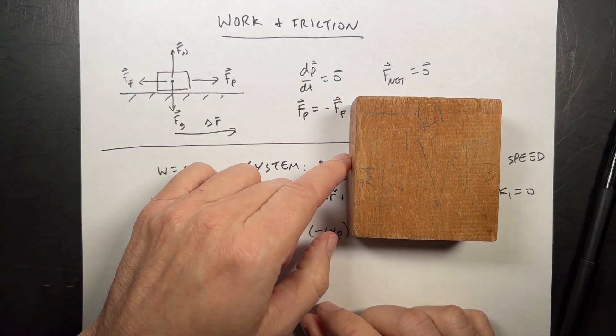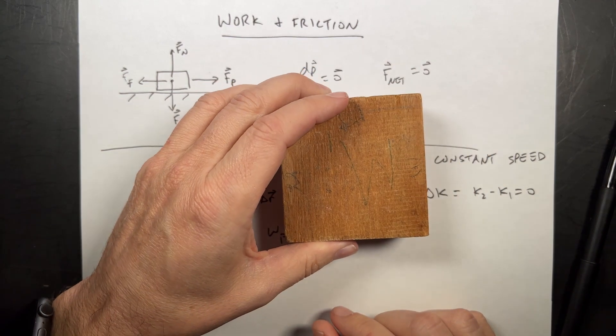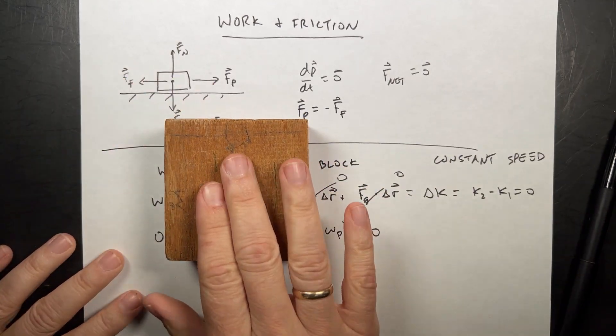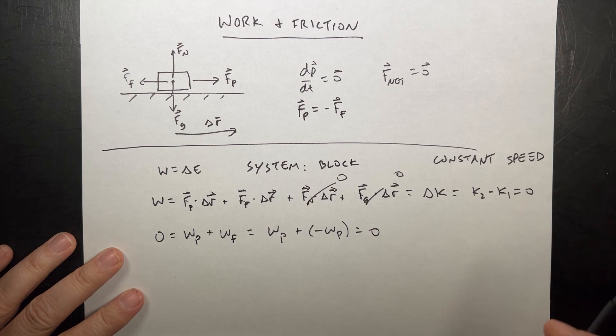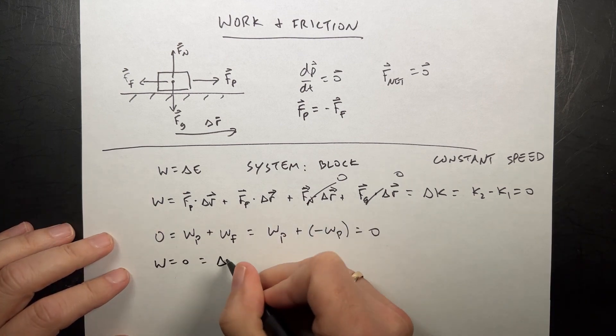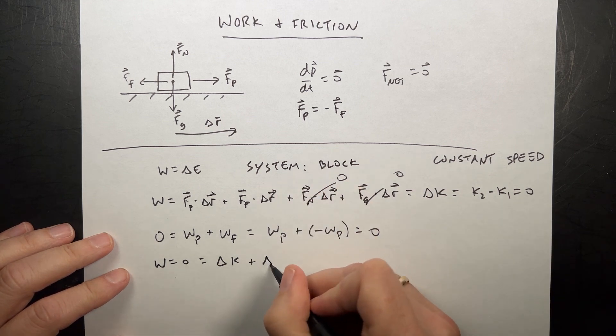If you push this for a kilometer at a constant speed, this is going to get hot. Not hot. It'll warm up. Right. It will warm up. So in fact, I have to say work is zero equals a change in kinetic energy. And I have to include thermal energy in my system too. Delta E thermal.